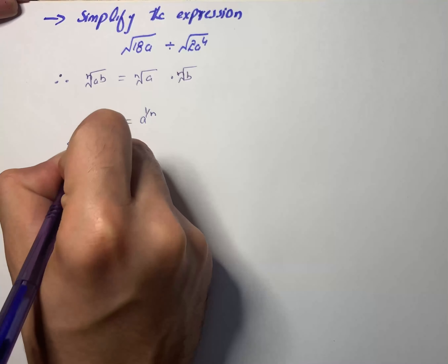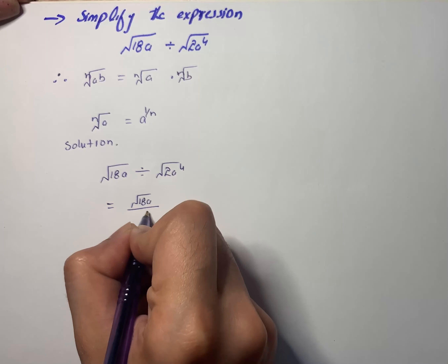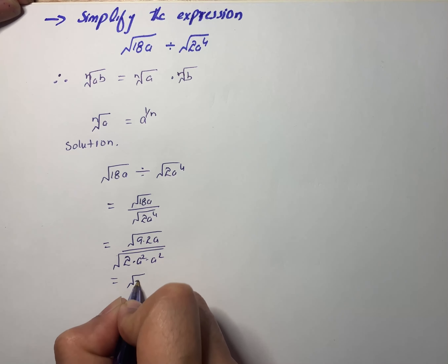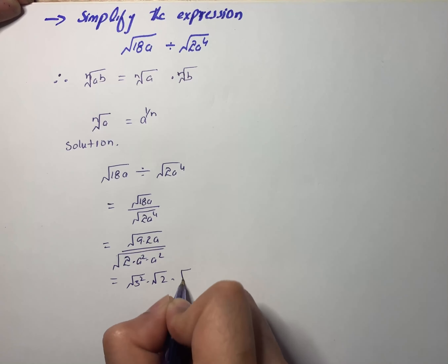Now we will start the solution. We consider the expression: the square root of 18a divided by 2a to the power of 4. We can write this as the square root of 18a divided by the square root of 2a to the power 4. We then factorize inside: 18a becomes 9 times 2 times a, and 2a⁴ becomes 2 times a squared times a squared. Separating the radicals gives us the square root of 3 squared, divided by the square root of 2, times the square root of a, times the square root of a squared, times the square root of a squared.